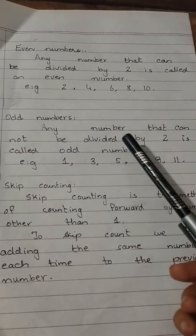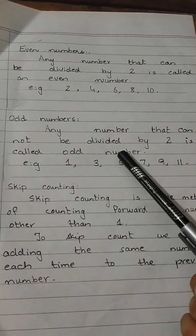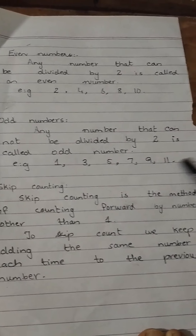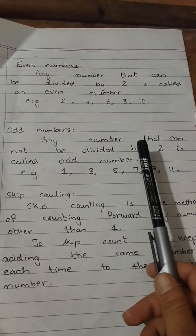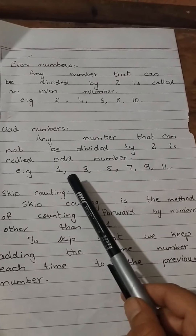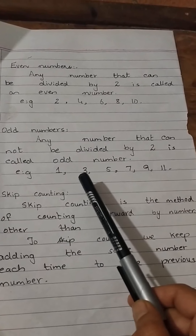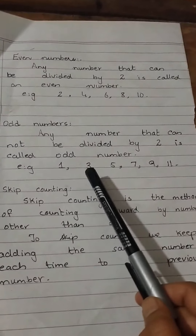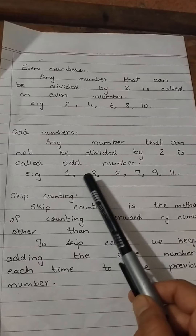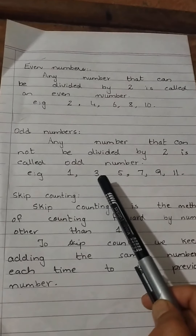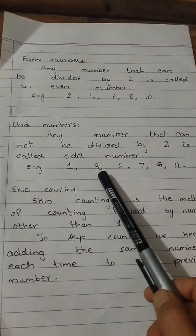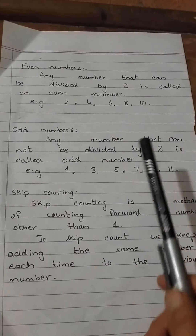Odd numbers: any number that cannot be divided by 2 is called an odd number. For example, 1, 3, 5, 7, 9, 11 and so on. Odd numbers cannot be divided by 2; they can only be divided by 1 or by itself — like 1×3=3 or 3×1=3. They are known as odd numbers.